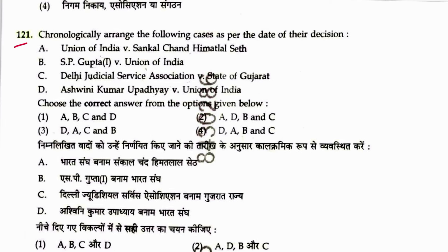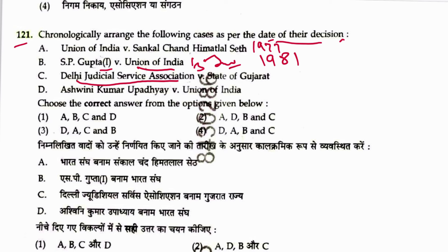Question 121: Arrange cases chronologically by date of decision — one case from 1981, another from 1991, Ashwini Kumar Upadhyay vs. Union of India from 2023. Sequence is A, B, C, D — i.e., 1, 2, 3, 4. Answer is 1.